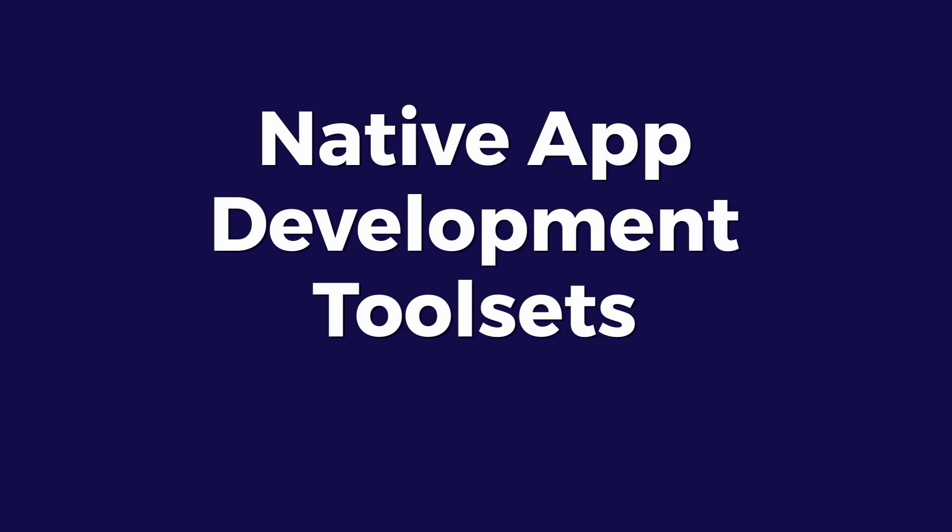What are the native app toolsets you can use? For iOS, you're generally going to develop your application in a program called Xcode. These programs are built in Objective-C or Swift, and Xcode sits on top of the iOS SDK — a single integrated development environment produced by Apple. For Android, you're generally going to be using Android Studio, sitting on top of the Android SDK, building in either Java or Kotlin — an ecosystem Google has put together to enable Android developers to build the best Android apps. The SDK, or software development kit, exposes all the functionality of the phones to the developer, allowing you to hook directly into the device to drive native application development.